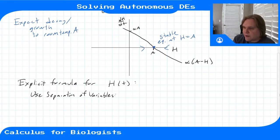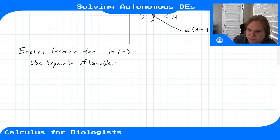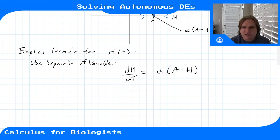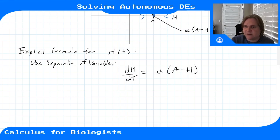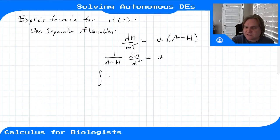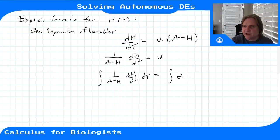We start with the differential equation dh/dt = alpha*(a - H). We want to get everything with H on the left-hand side, so we divide by (a - H): one over (a - H) times dh/dt equals alpha. Then we integrate both sides with respect to time, giving us the integral of [1/(a - H)] * (dh/dt) dt equals the integral of alpha dt.